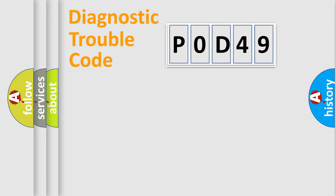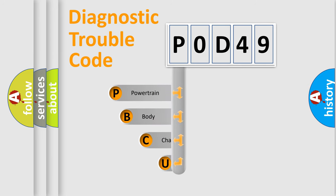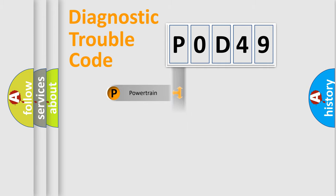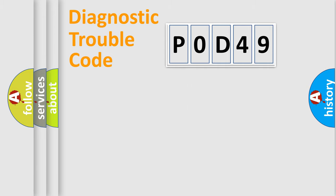Let's do this. First, let's look at the history of diagnostic fault code composition according to the OBD2 protocol, which is unified for all automakers since 2000. We divide the electric system of an automobile into four basic units: Powertrain, Body, Chassis, and Network.